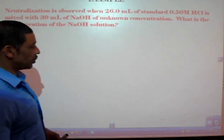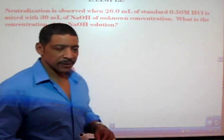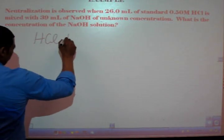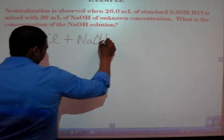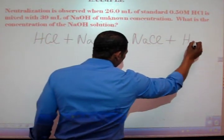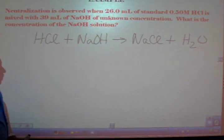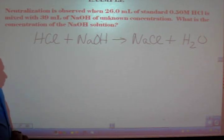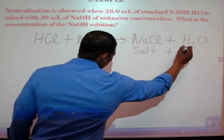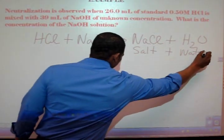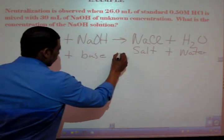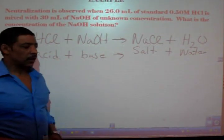What is the concentration of the sodium hydroxide solution? Our first step is to write the balanced equation. HCl plus NaOH reacts to produce the salt, sodium chloride, and of course water. When an acid reacts with the base, the product will always be a salt and water.